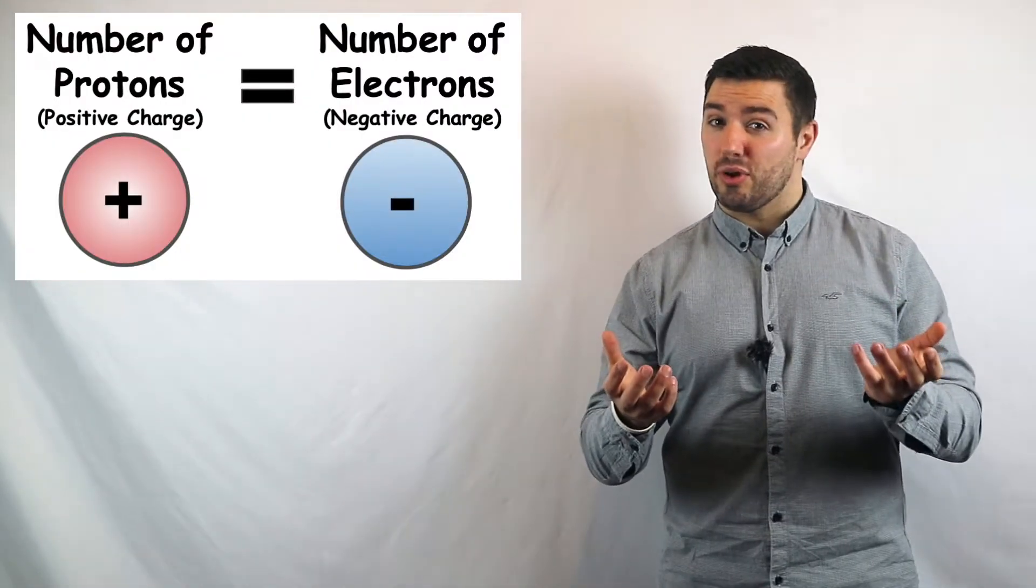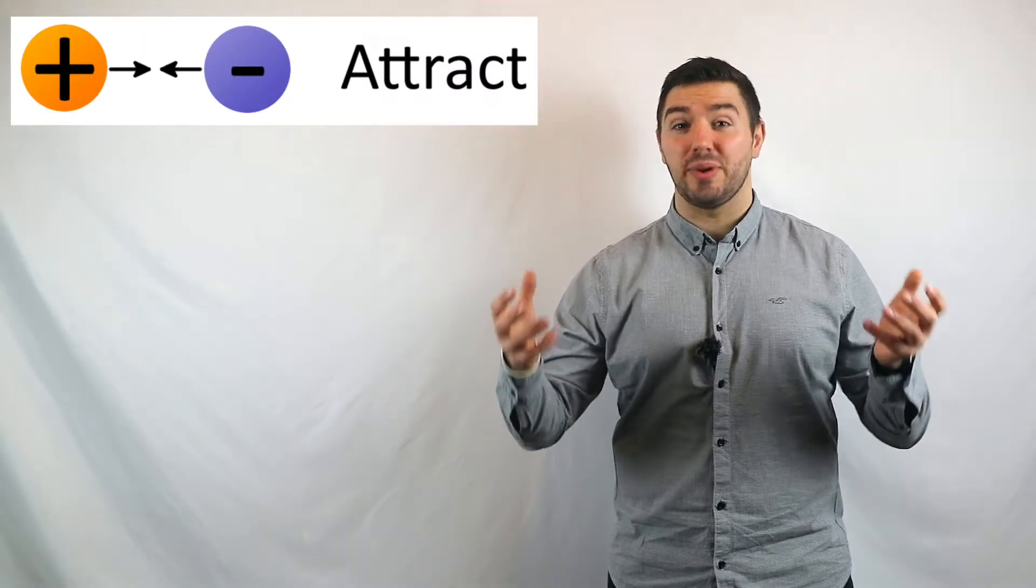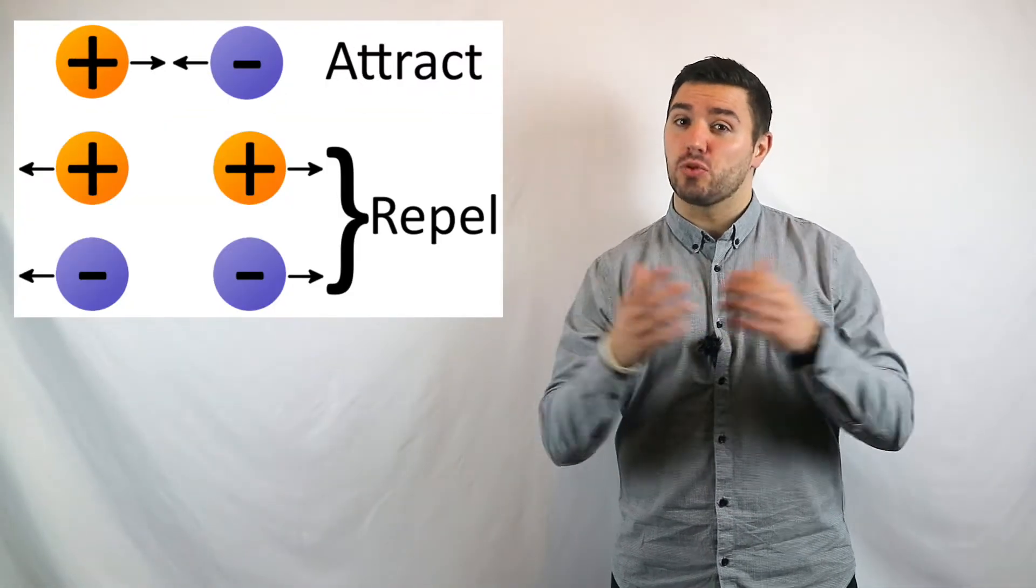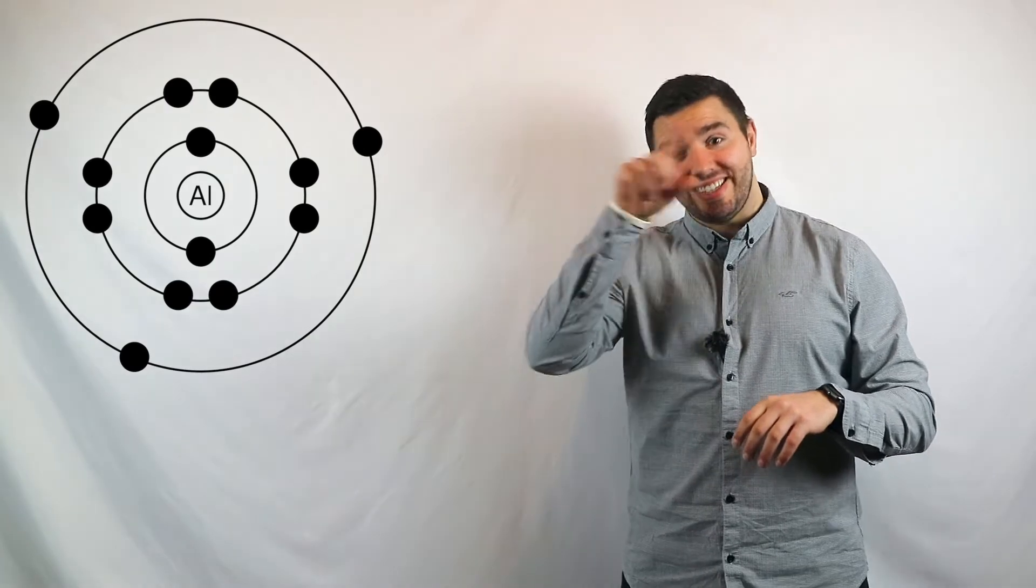Well, we could say the exact same thing about atoms. The number of protons is equal to the number of electrons. Opposite charges tend to be attracted towards each other, whereas similar charges seem to repel. That's why electrons exist in shells.